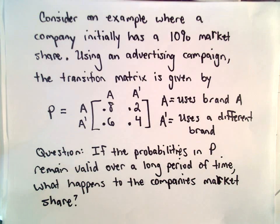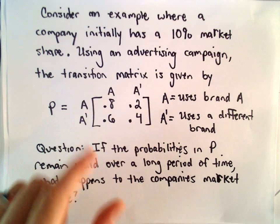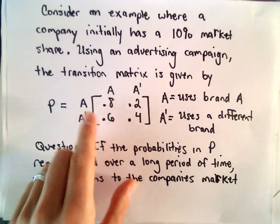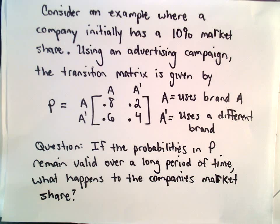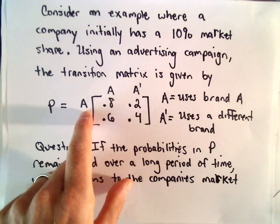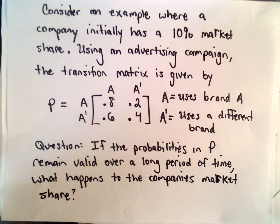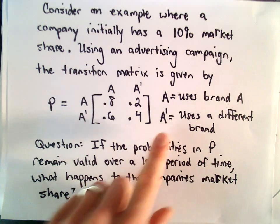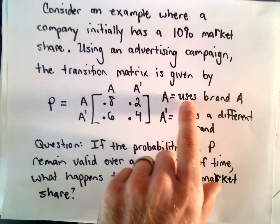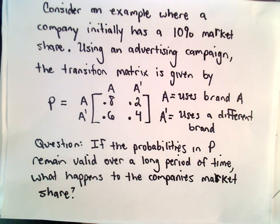So suppose we've got an example where a company initially has a 10% market share. They're going to use an advertising campaign, and with that campaign we're able to come up with a transition matrix given by the following. Our transition matrix P in our first row has entries 0.8 and 0.2. In the second row, we have entries 0.6 and 0.4. The first row and first column correspond to brand A. A prime means they use a different brand.